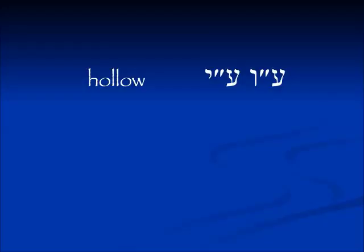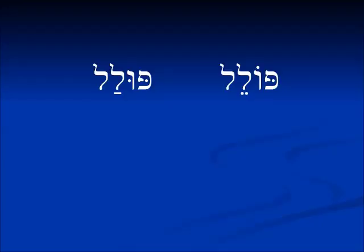A hollow verb is one in which the middle letter is either a vav — either cholem vav or shurik — or a yud. Sometimes you will see an artificial binyan, which appears in Gesenius and maybe in some of the older grammars, which is called Polel or Pulal if it's the Pu'al. The reason for this is that in the Piel and in the Hitpa'el, when the verb is hollow, the last letter doubles.